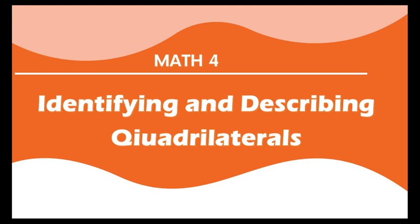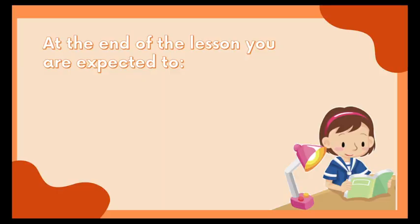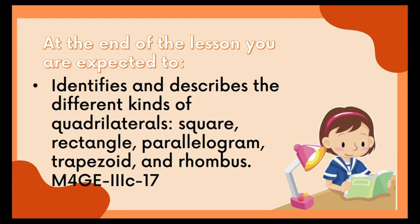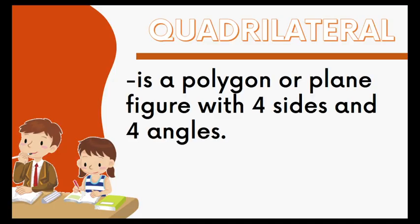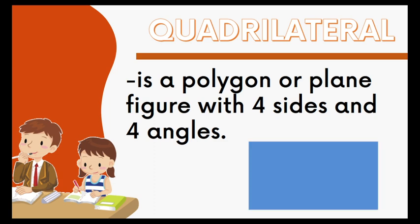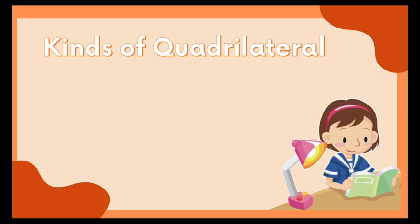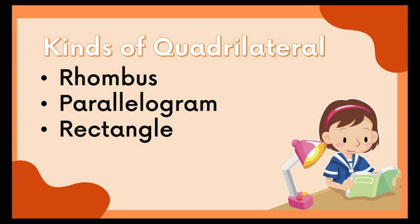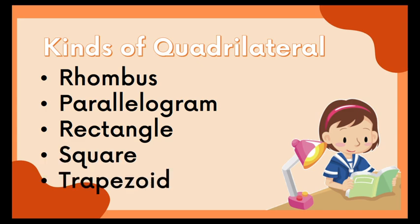Now let us go to our second topic, which is identifying and describing quadrilaterals. Our objective is to identify and describe the different kinds of quadrilaterals: the square, rectangle, parallelogram, trapezoid, and rhombus. A quadrilateral is a polygon or plane figure with four sides and four angles. The different kinds of quadrilateral are the rhombus, the parallelogram, the rectangle, the square, and the trapezoid.